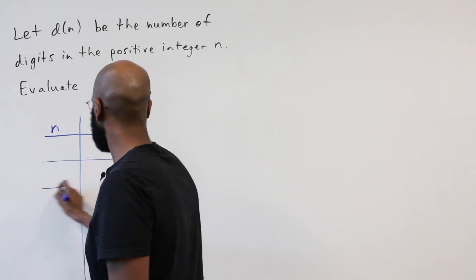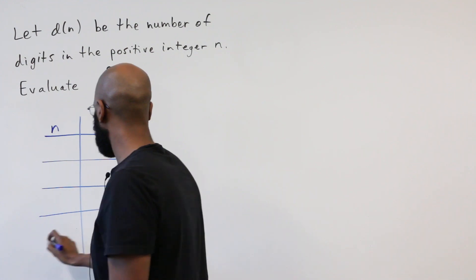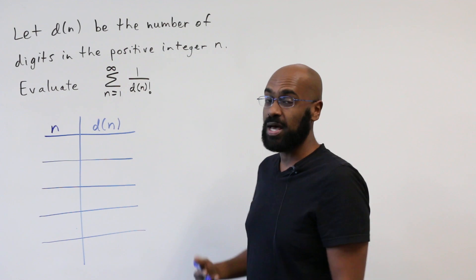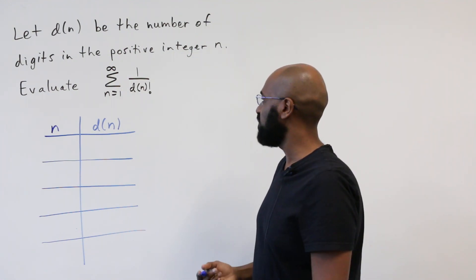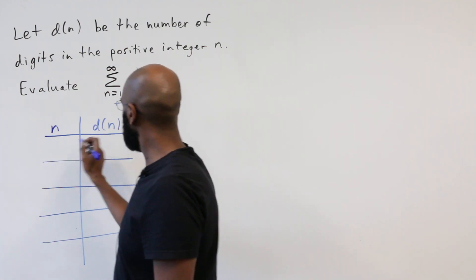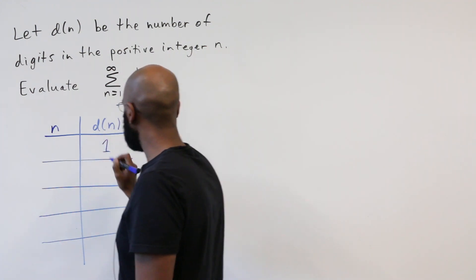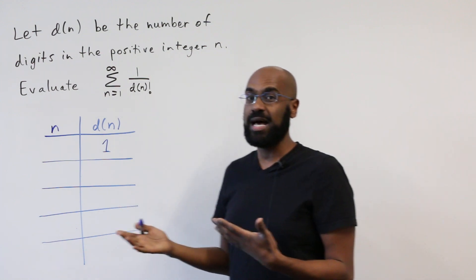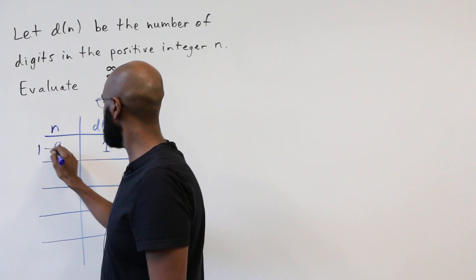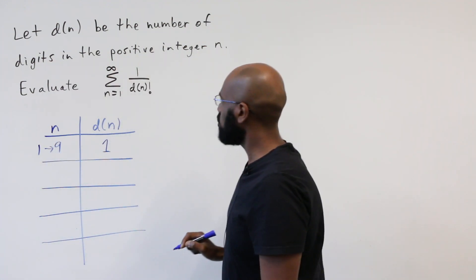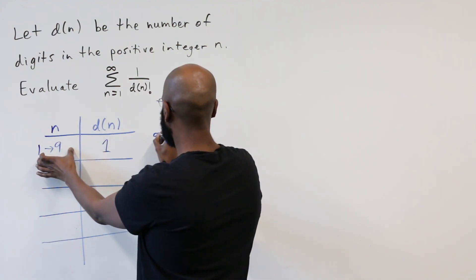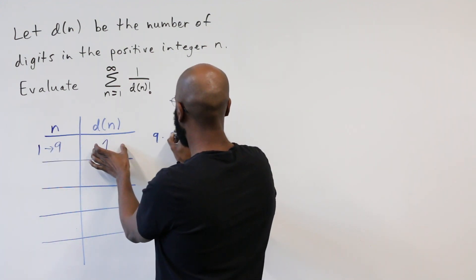So let's make a chart to do so and then use that to figure out a way to write this expression in a way that might be more amenable to finding the actual sum. Okay, so first, the numbers for which d of n is 1 are the numbers that have exactly 1 digit. So those are the numbers between 1 and 9. So the total contribution of these numbers is the number of them, which is 9, times 1 over 1 factorial.